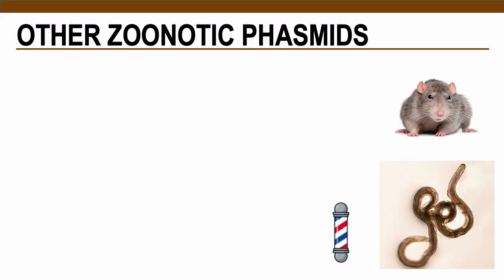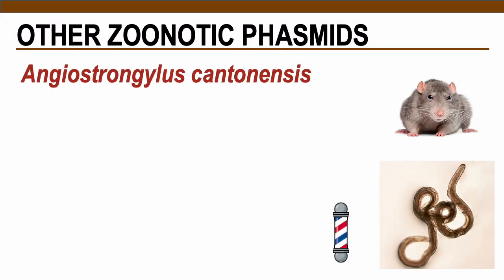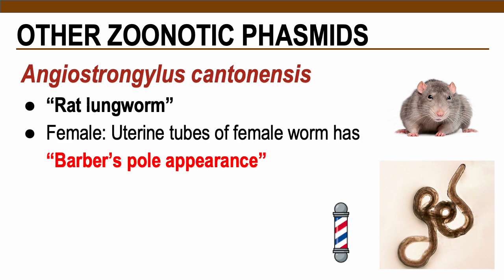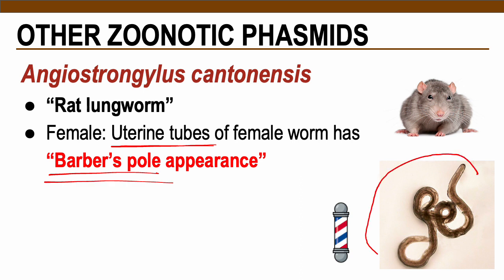The next parasite is Angiostrongylus cantonensis — the rat lungworm. In terms of morphology, the most described one is the female adult worm, which contains uterine tubes that resemble a barber's pole, just like here on this picture.